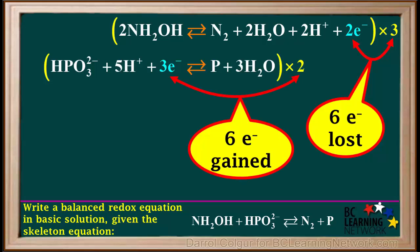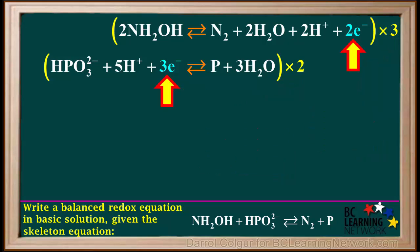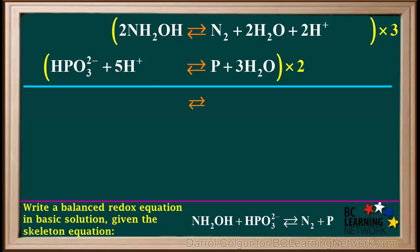So, because electrons gained are now equal to electrons lost, the electrons can be cancelled from the half-reactions. Now we are left with these. At this point, we add what we have on the left and right of the arrows to obtain the equation for the overall redox reaction.